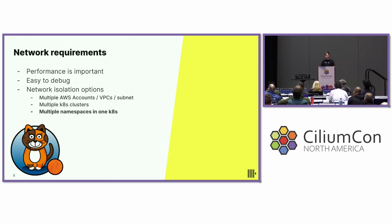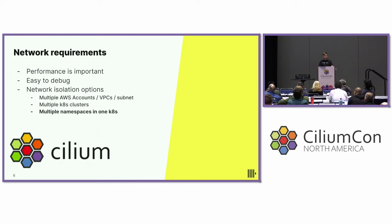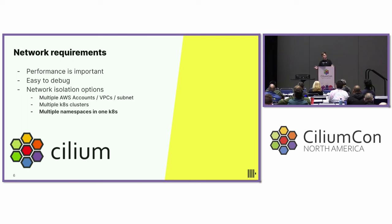Initially, we started with Calico. It worked for us, but later we switched to Cilium because Cilium had better performance compared to Calico. One of the reasons is eBPF, and another advantage of Cilium is its network policies. To be fair, Calico also added eBPF support later, but we still decided to go with Cilium.